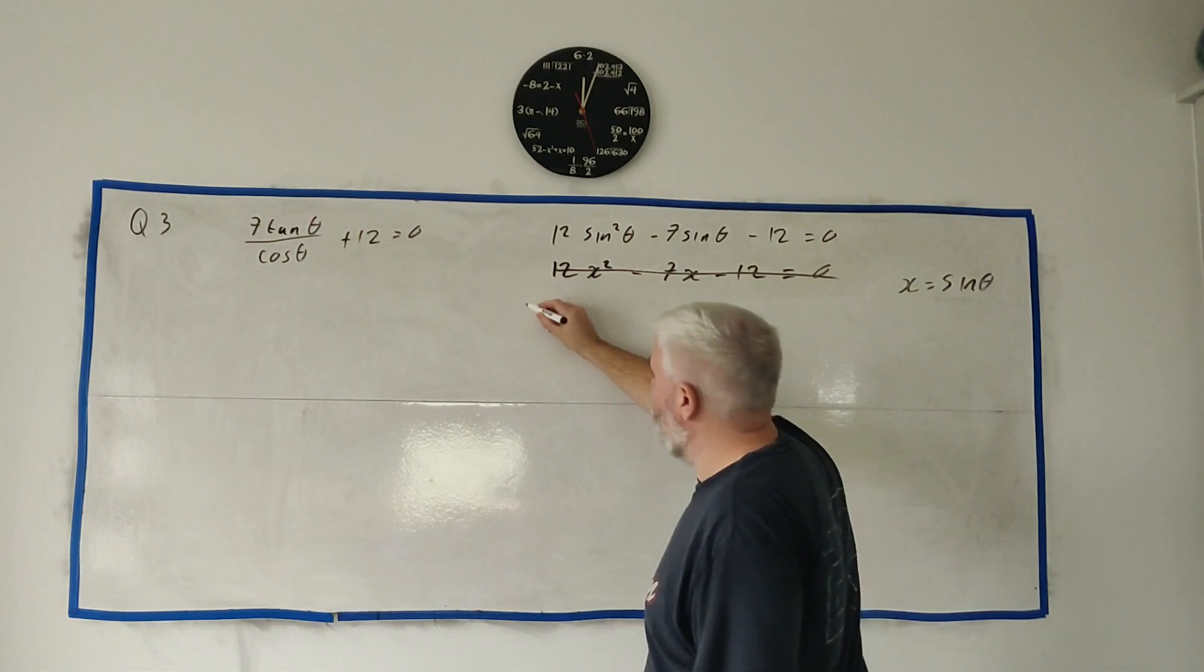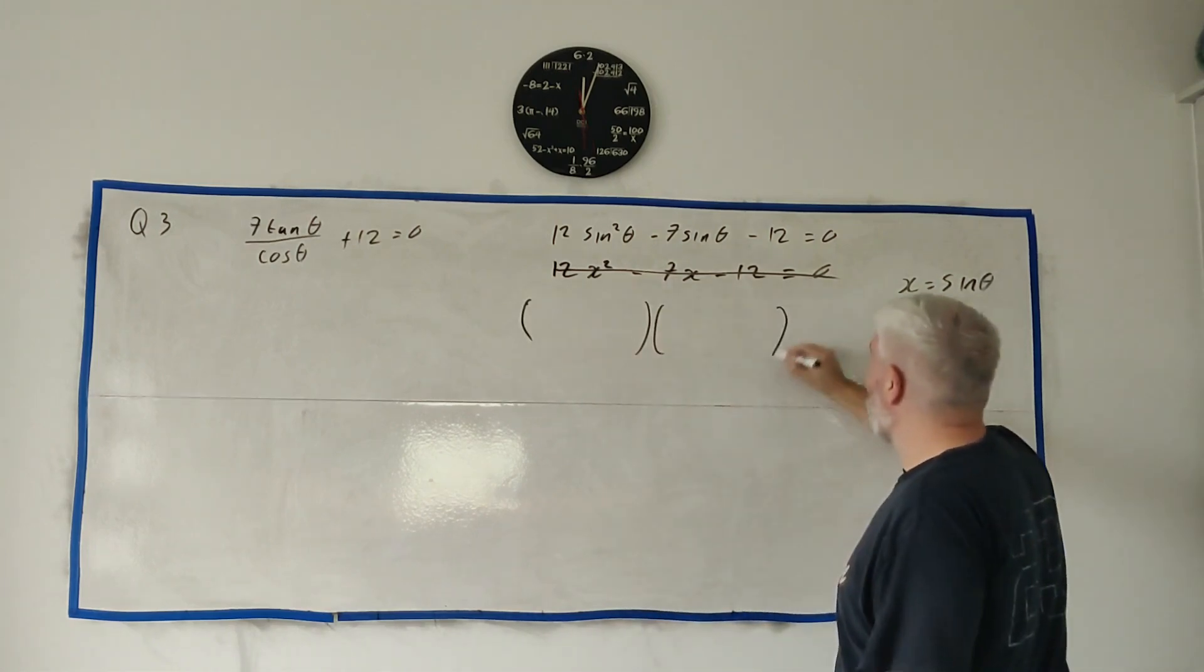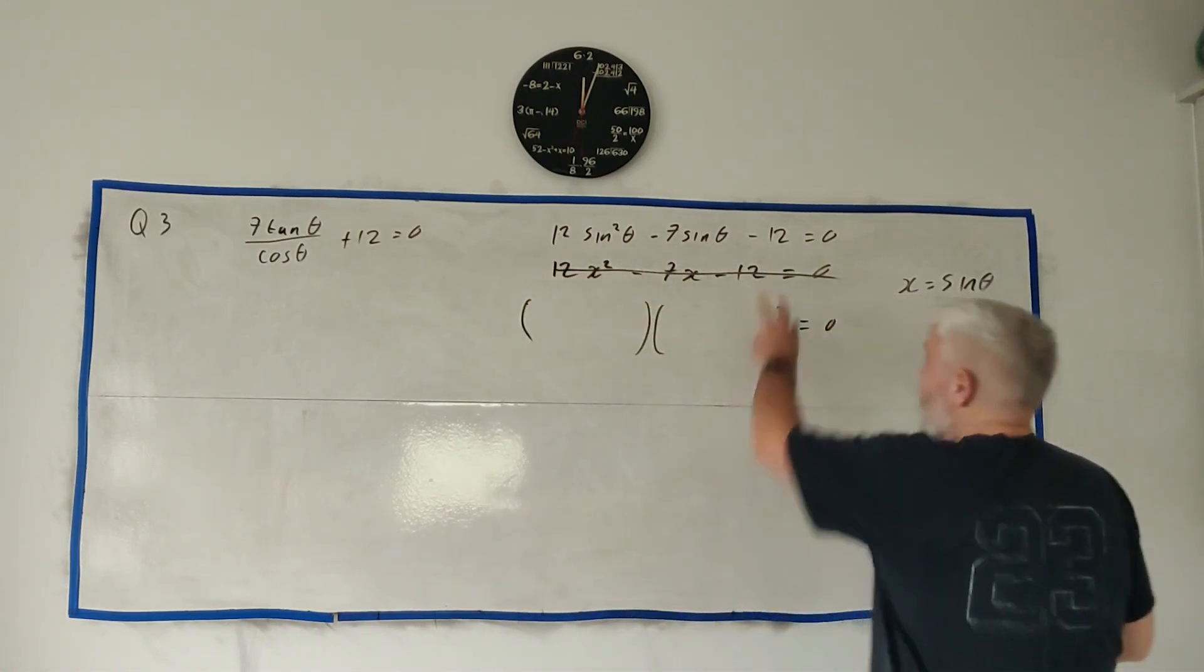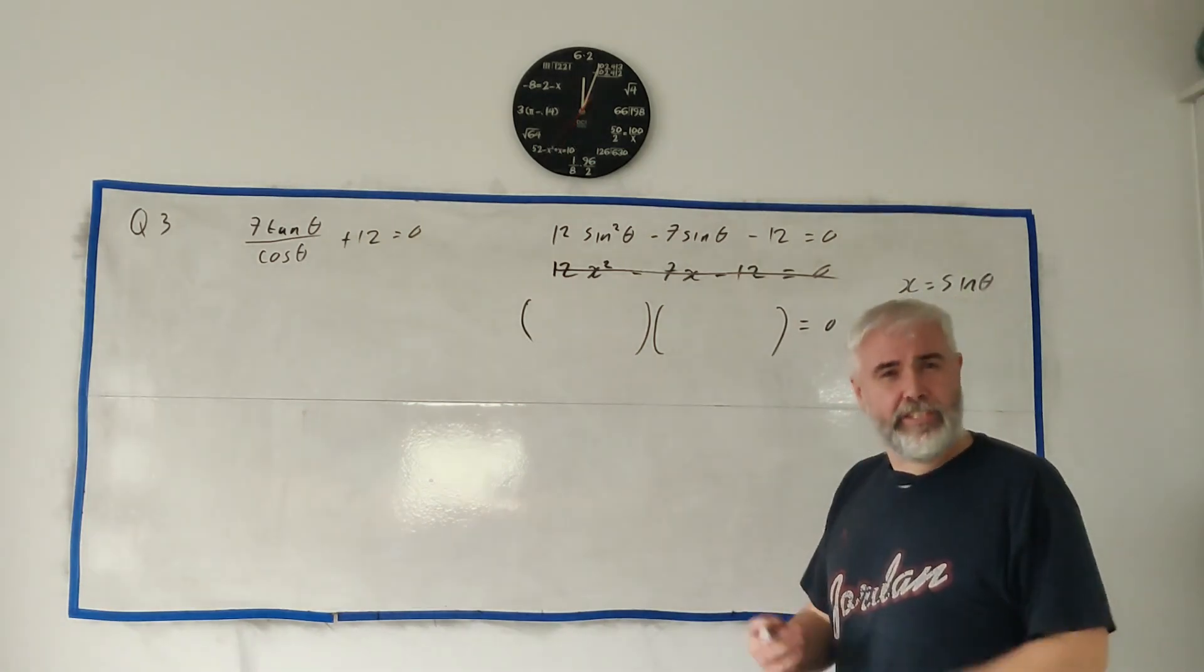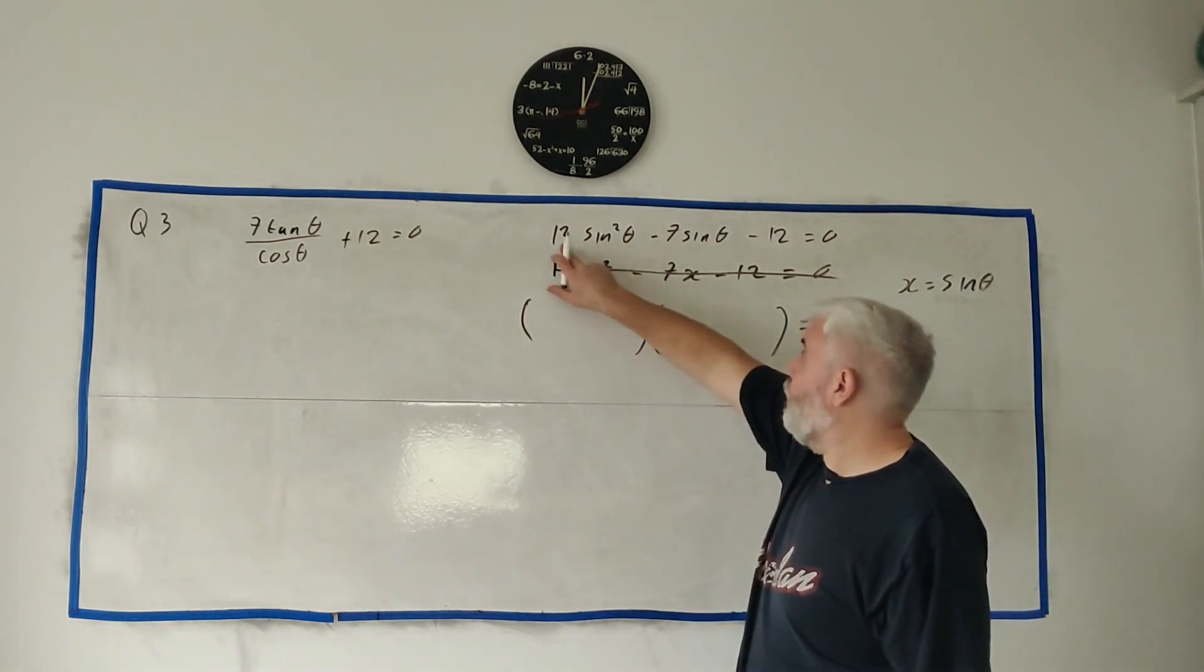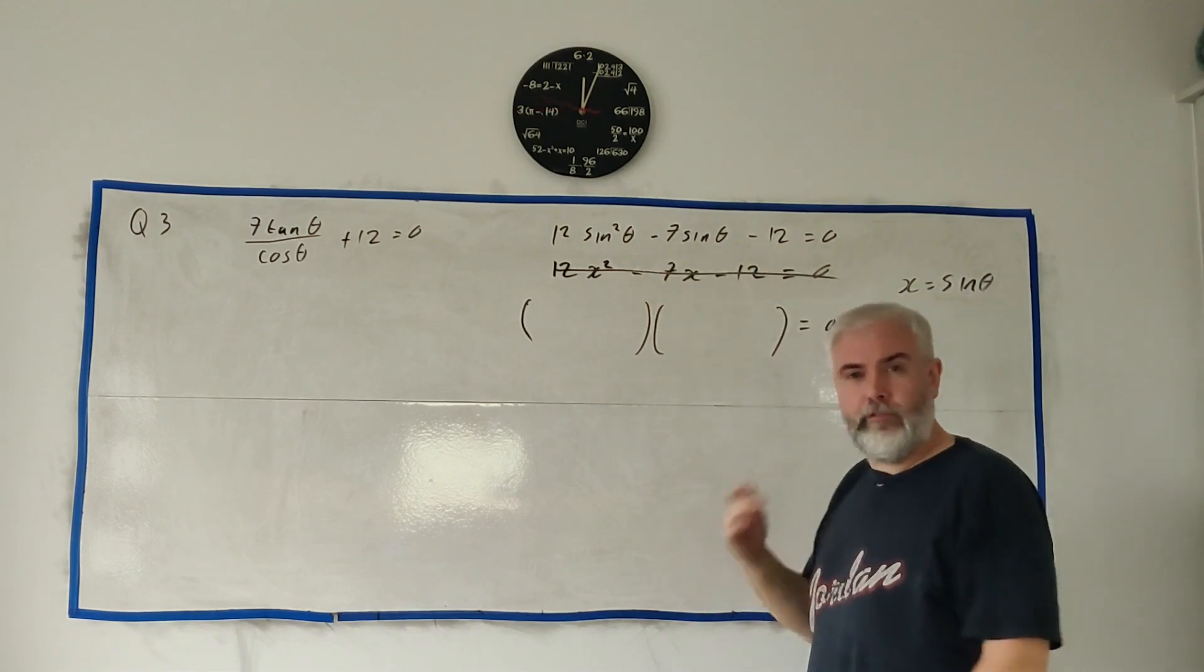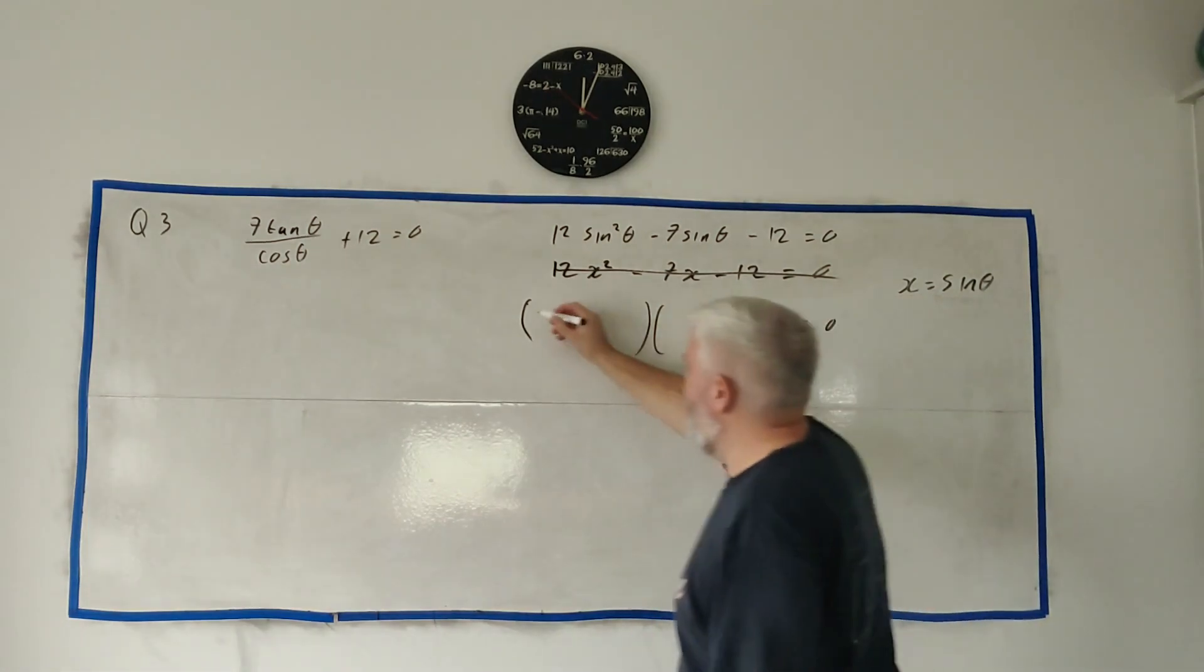To solve this, there's a couple of choices. You can just factorize it. It's not all that easy, though. Because 12, there's lots of factors to 12. It would take you a few minutes just testing through them all. The other options, obviously, are minus B formula. Remember, A is 12, B is minus 7, and C is minus 12. Or, of course, you can complete the square is the other option. We will factorize. Because I spent a few minutes doing it.